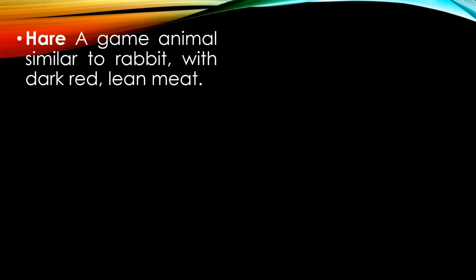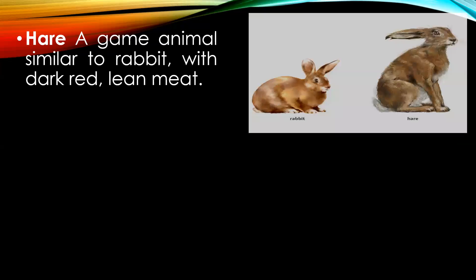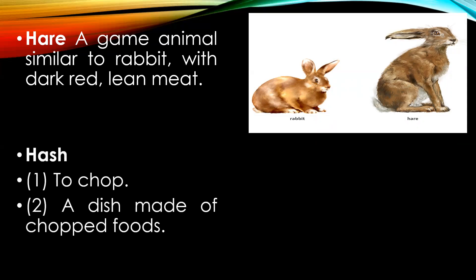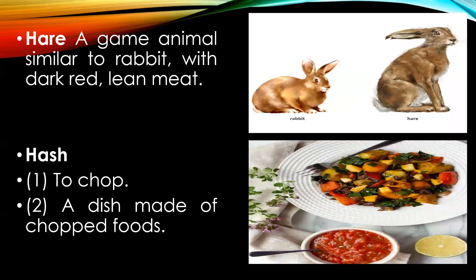The next term is hare — H-A-R-E — a game animal similar to rabbit with dark, lean meat. The next term is hash. The first meaning is to chop. The second meaning refers to a dish made of chopped foods.